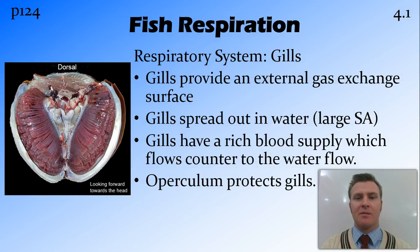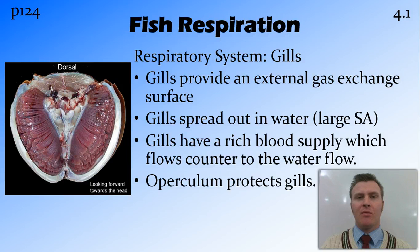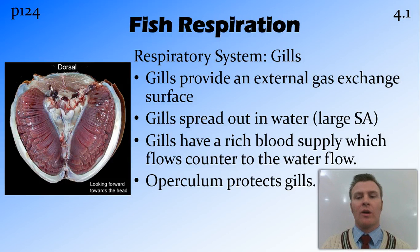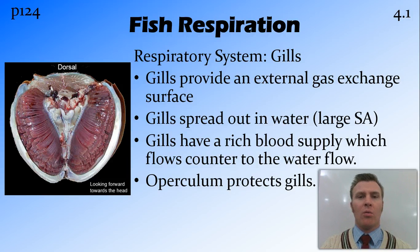Fish have gills as their respiratory system, which provides a gaseous exchange surface external to their body. The gills have a very large surface area and actually spread out and fan out when in water due to buoyancy. They have a rich blood supply running through each gill, so that the oxygen dissolved in the water can be very close to the blood flow. Over the top of the gills they have an operculum, which protects the gills from being poked or bumped. Water comes in the mouth of the fish, runs across the gills, and then exits through a slit at the back of the operculum.